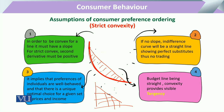Koi bhi jo do commodities hain woh itni identically perfect substitute ek doosre ka ho sakti hain. Aur isi tariqe se hum yeh keh sakte hain ke agar convexity ka rule ham ne dekhna hai, toh uske liye ek underlying assumption maujood hogi.